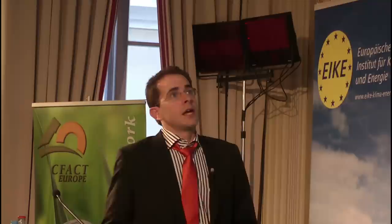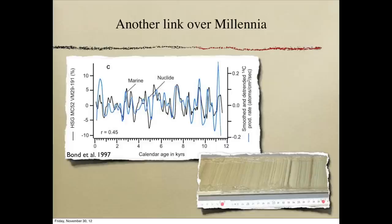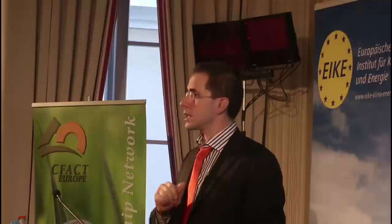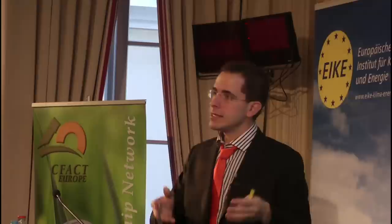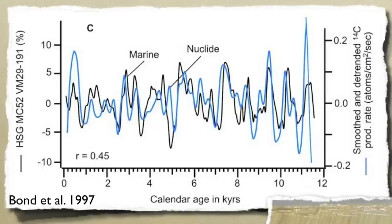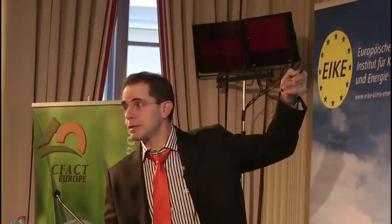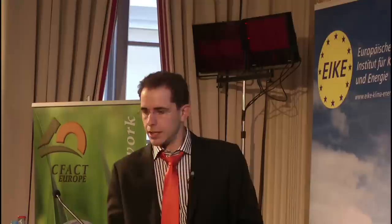Here's another example. Again, carbon-14 in blue is a proxy of solar activity. In black, you have a sedimentation record from the ocean seafloor in the northern Atlantic — a proxy of climate in the northern Atlantic. When you have colder winters, ice can reach further south, melts, and deposits its ice-rafted debris further south, which you can see from seabed cores. Again, you see a correlation between the climate proxy in the northern Atlantic and the solar activity.